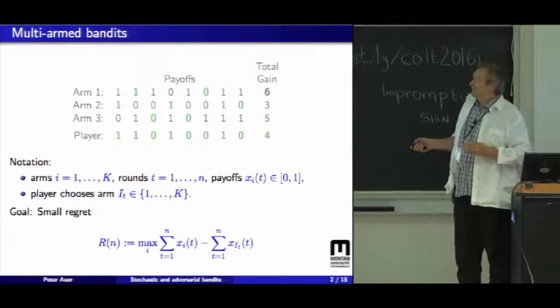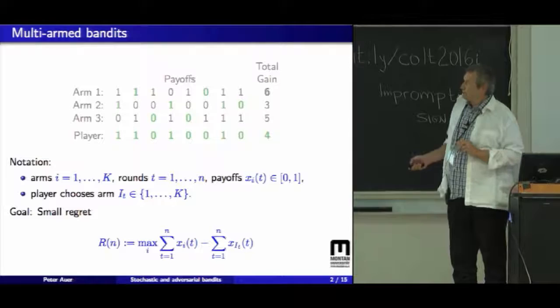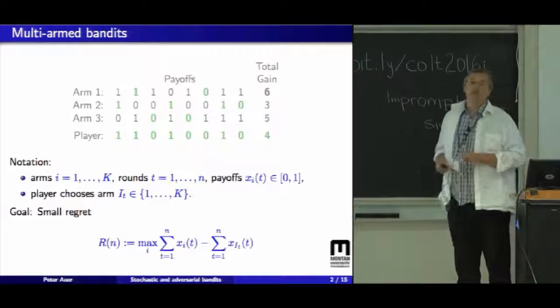Just the settings. So we have payoffs, which you can think of 0, 1, and we're interested in the regrets. So that is, how much does the algorithm lose in payoffs compared to the optimal arm?